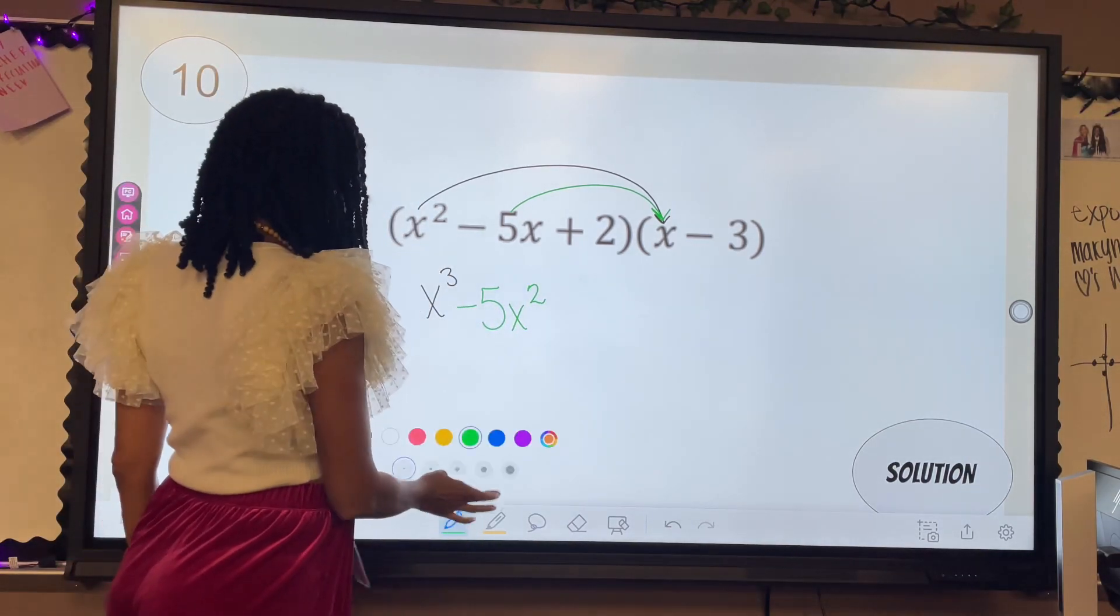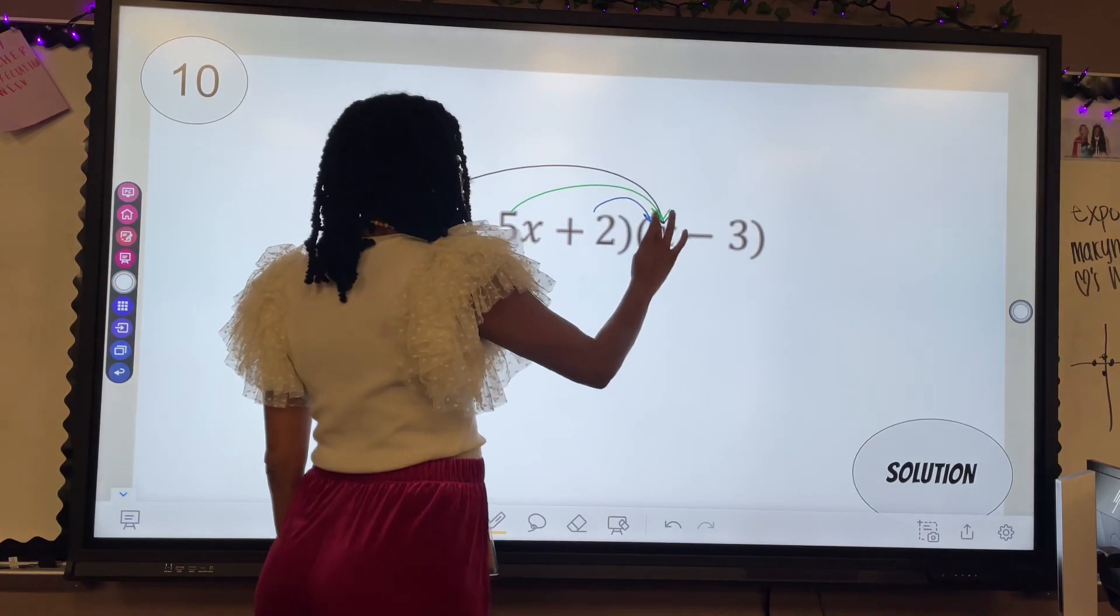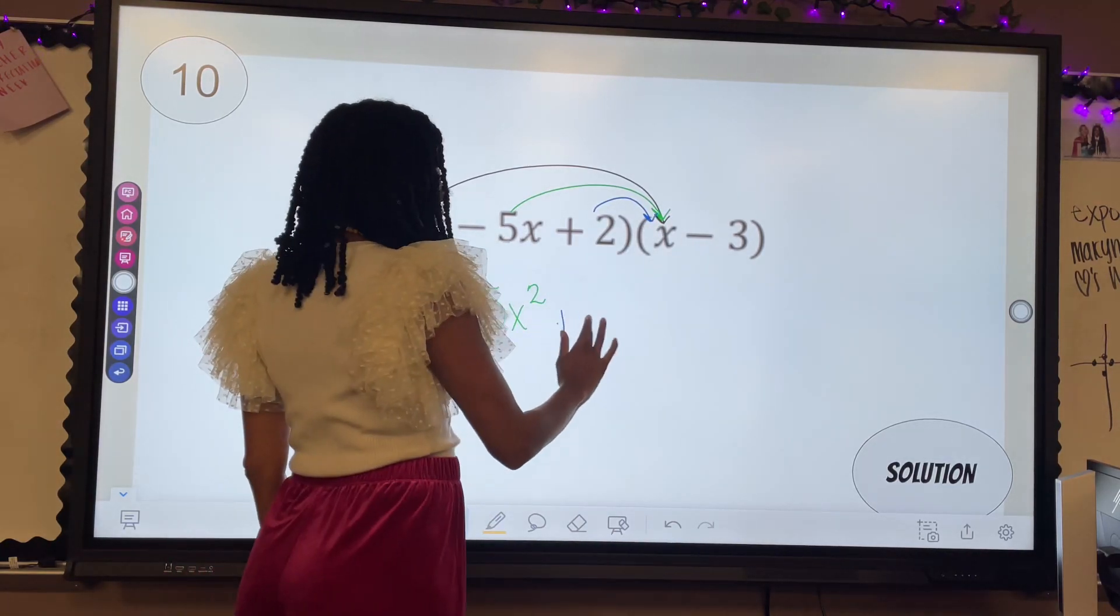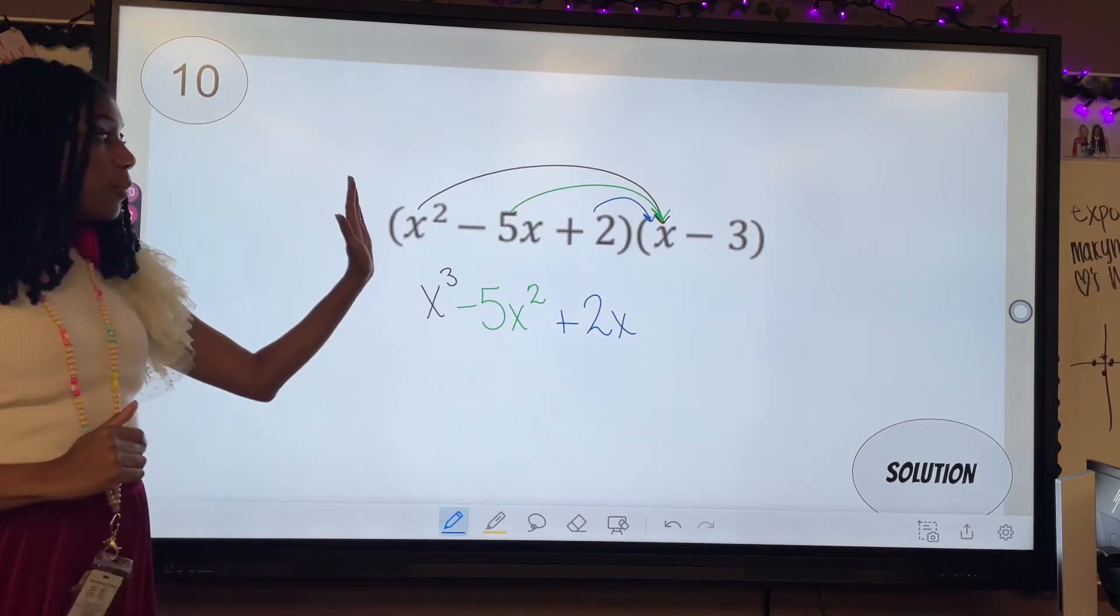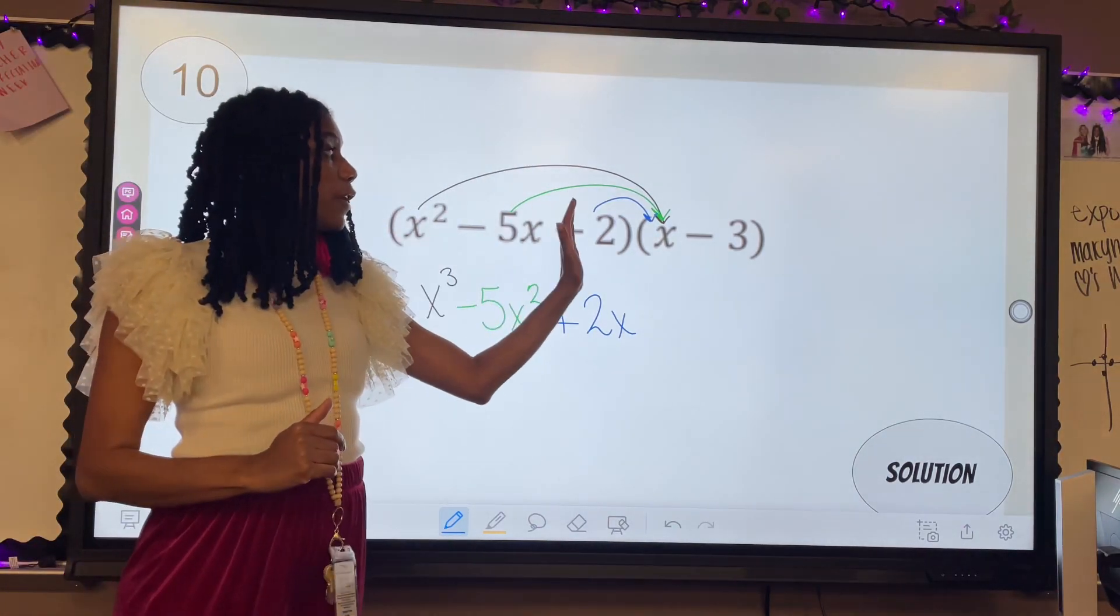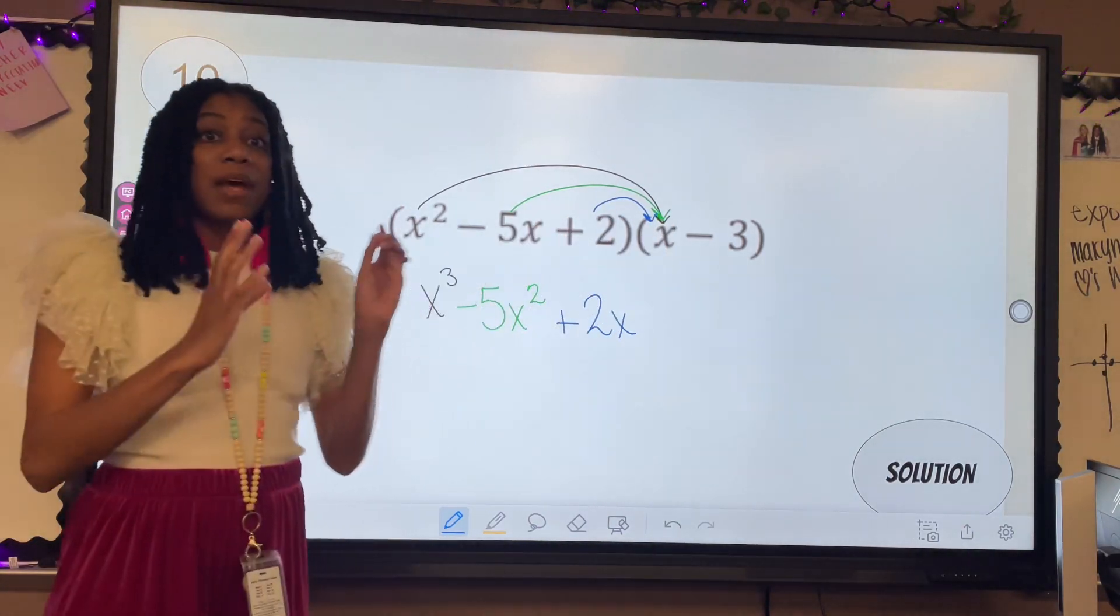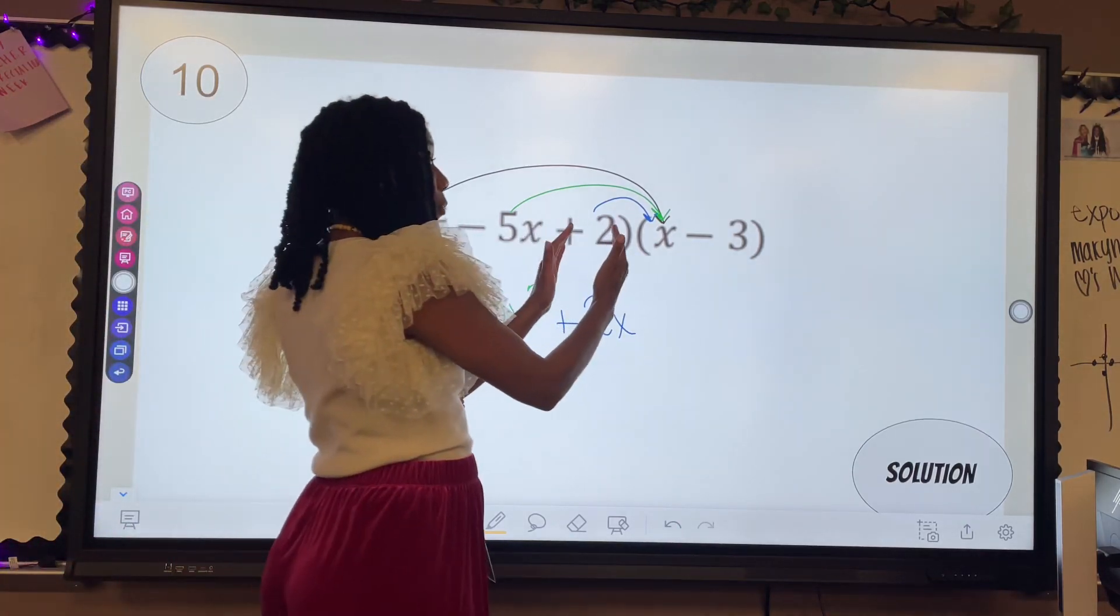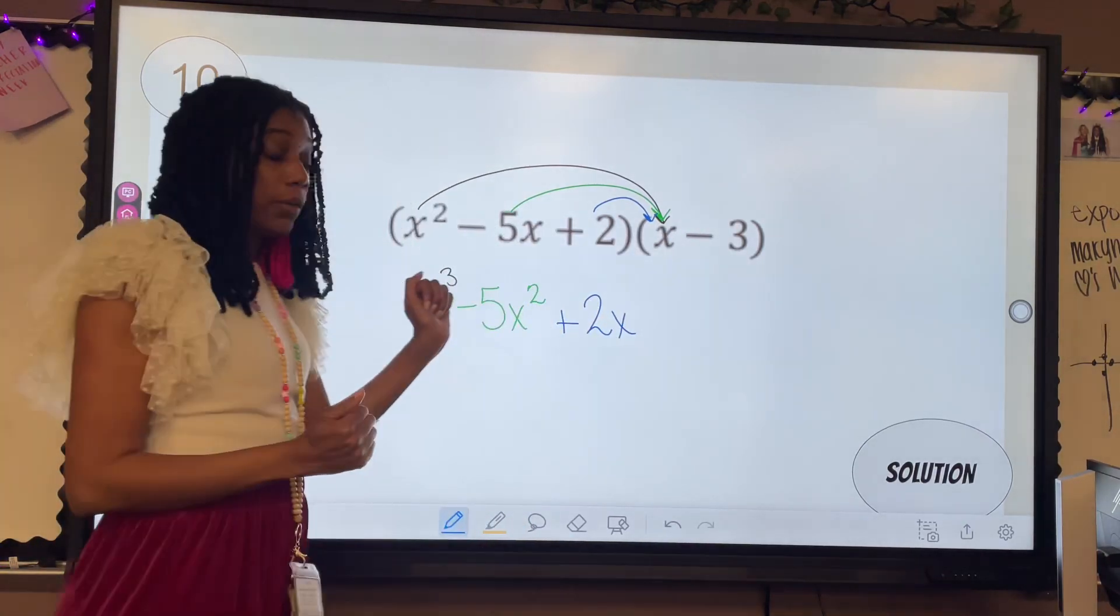Then I would do two times x, which is just two x. So I've multiplied every single thing in the first parentheses by the first one. Now I'm going to do everything in the first parentheses by the second term.